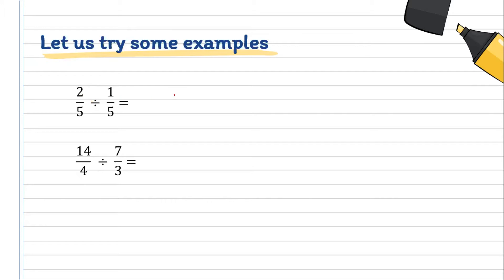We have two-fifths divided by one-fifth. From division, we change into multiplication, and the reciprocal of one-fifth is five over one. Now let's look at the four numbers. We see that 5 and 5 can be divided by 5. So 5 divided by 5 is 1, and the other 5 divided by 5 is also 1.